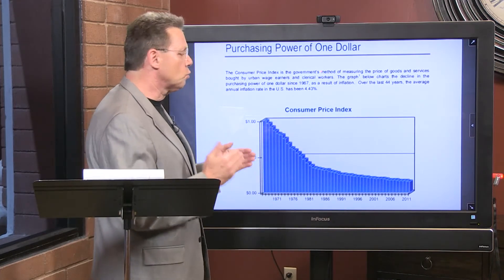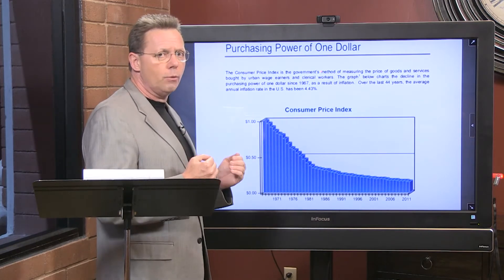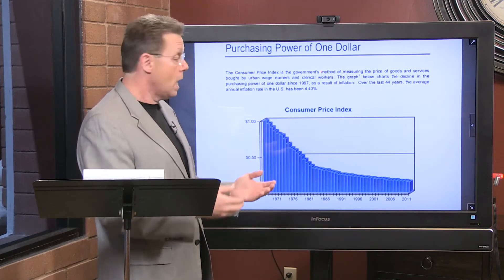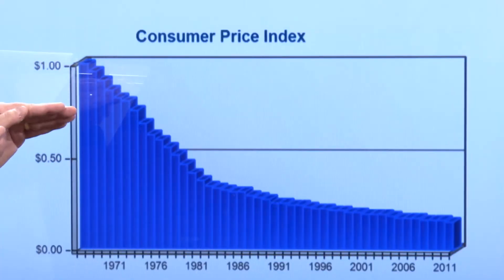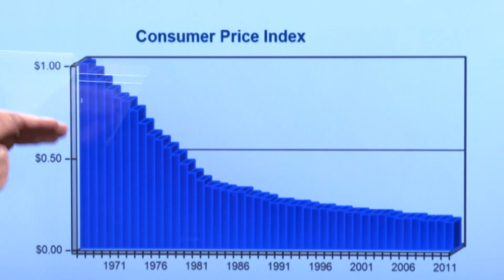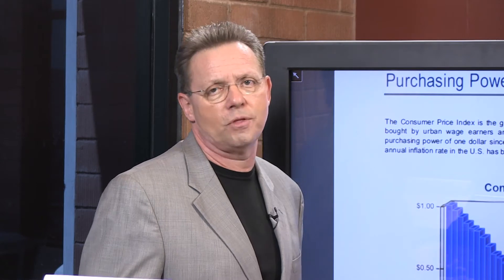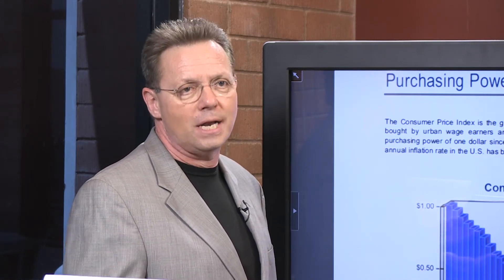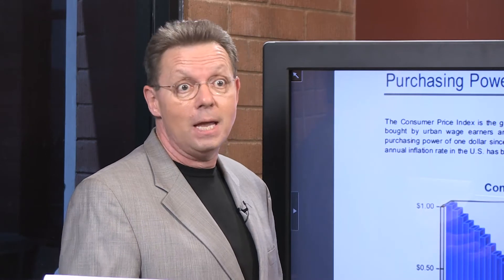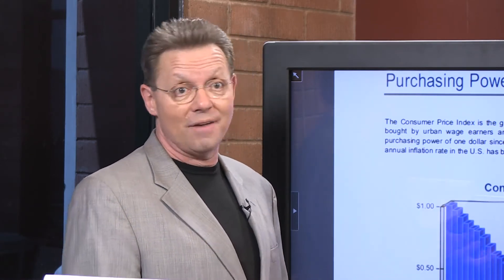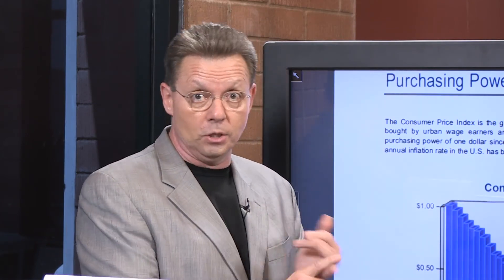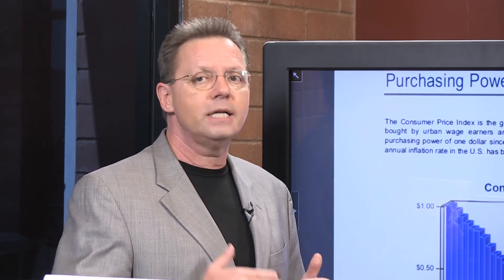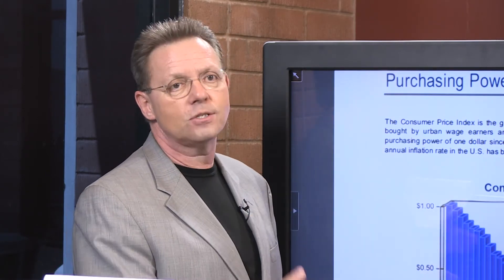Since we're using annuities for income — many times for retirement supplemental income — this is really important. If I'm deferring with an annuity and not having to pay taxes, stalling distributions until I'm forced to take them, I'm going to get a little hedge on inflation and the Consumer Price Index. My goal is to mitigate what I already know is going to happen: my dollars becoming less and less powerful to buy everyday items, pay utilities, gasoline, and regular bills that keep going up.